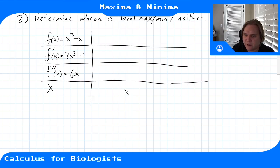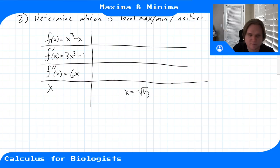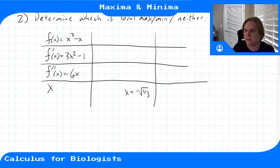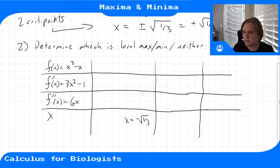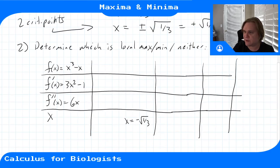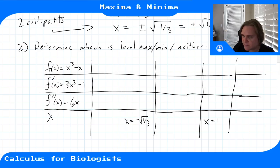We set up the table with critical points x = -√(1/3) and x = +√(1/3). We need columns for the intervals around these points.